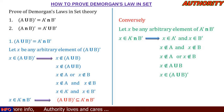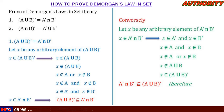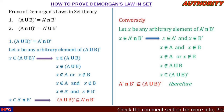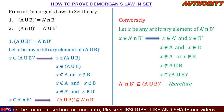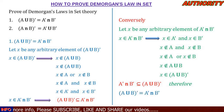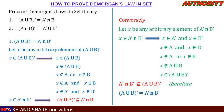Therefore, A complement intersection B complement is contained in (A union B) complement. Looking at our two conclusions: the first says (A union B) complement is contained in A complement intersection B complement, and the second says A complement intersection B complement is contained in (A union B) complement. Comparing these two, we conclude that (A union B) complement is equal to A complement intersection B complement. That is the first law.